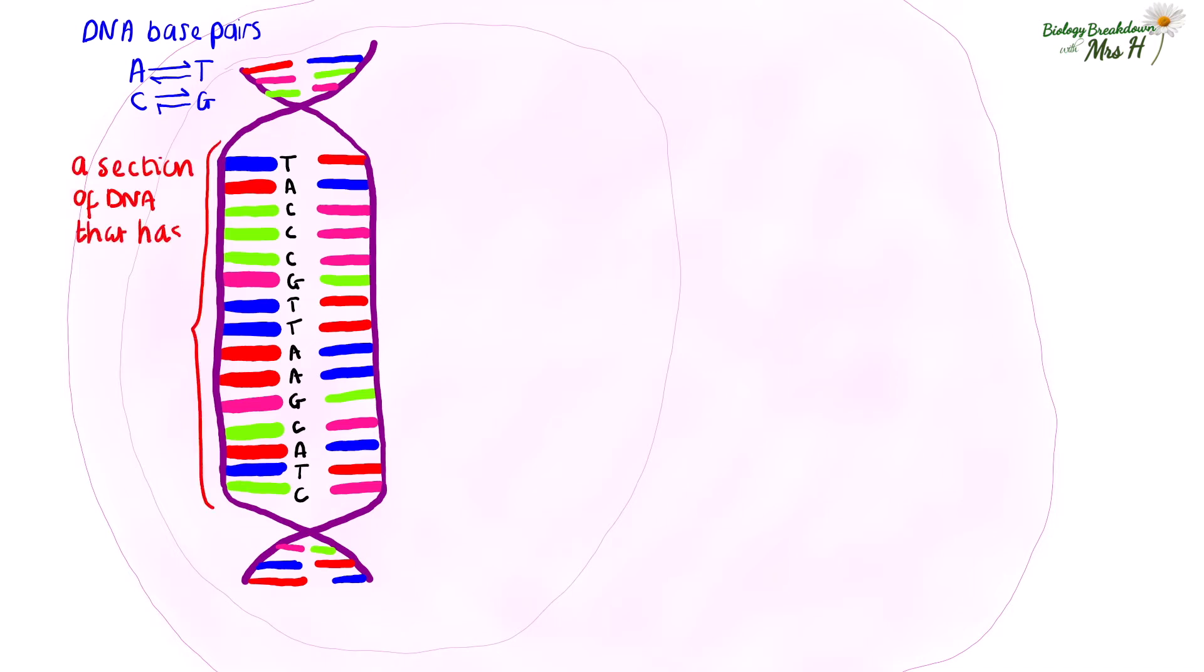A section of DNA that has a code to make a protein is called a gene. DNA consists of many different genes, each being the code to make many different proteins.